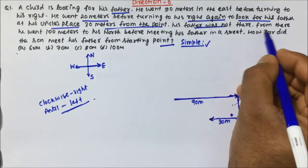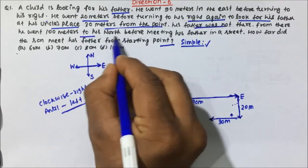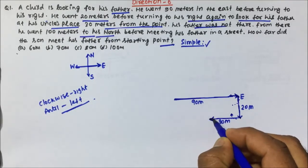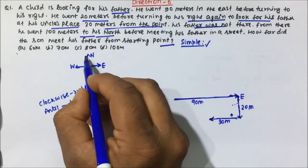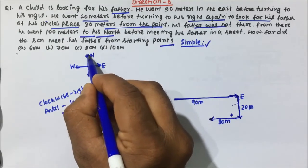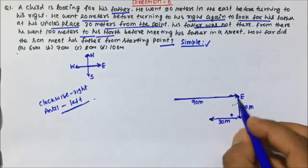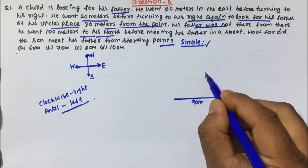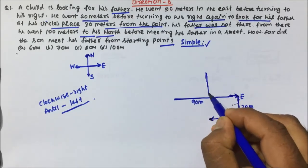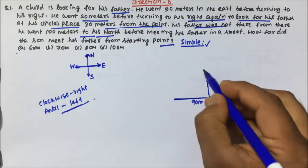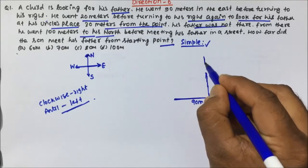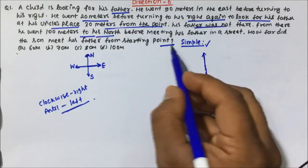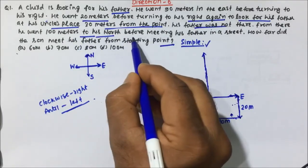From there he went 100 meters to his north. From here the child is going 100 meters to his north. If you see the north, north will be upward. So from here the child will go north and the distance will be 100 meters, so the child will come somewhere here.